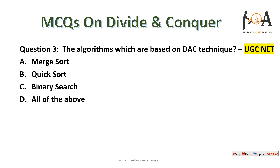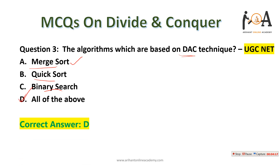The next question: which algorithms are based on divide and conquer? Merge sort — first we divide each array in half, then merge. Quick sort uses a pivot element and partitioning. Binary search divides by finding the middle element and going left or right. All of these are based on divide and conquer techniques, so option D is the right answer.